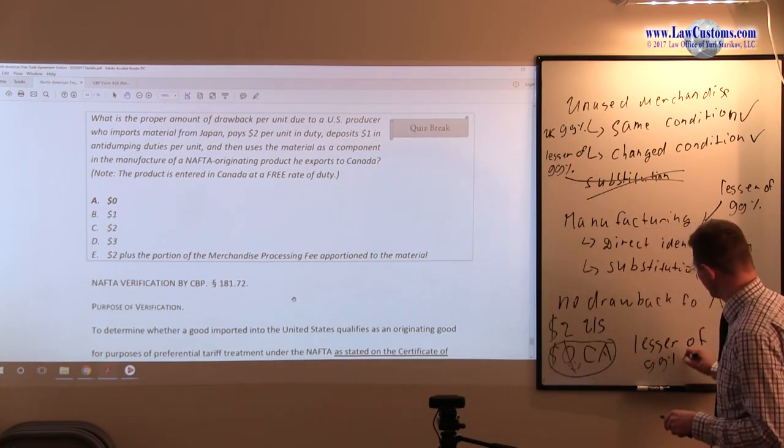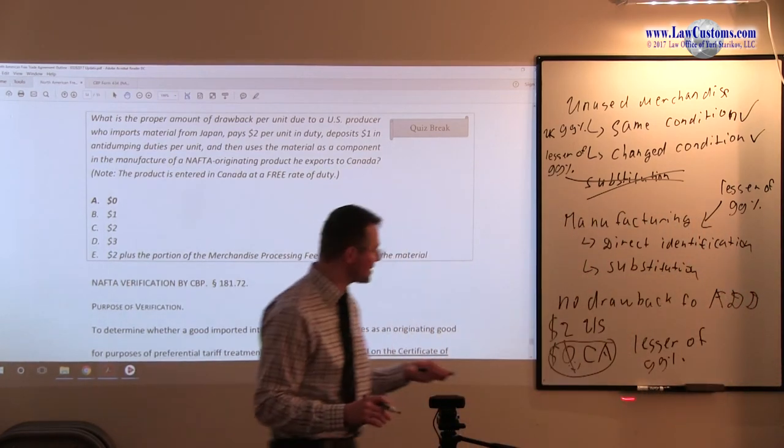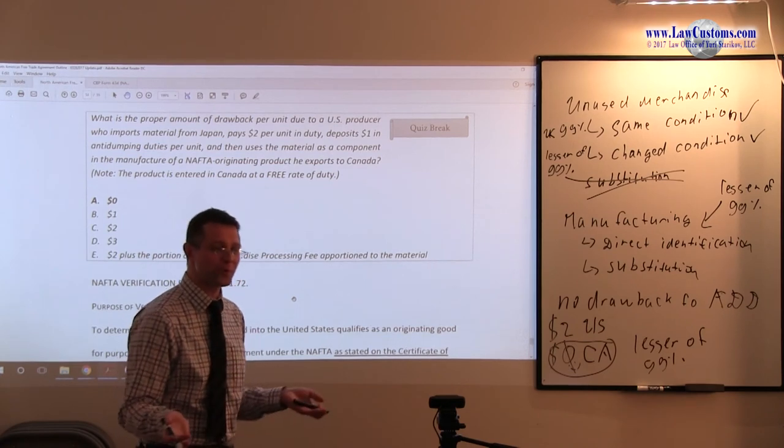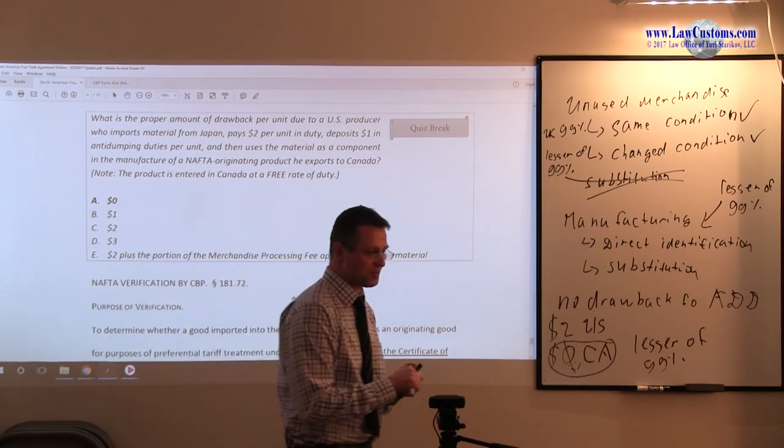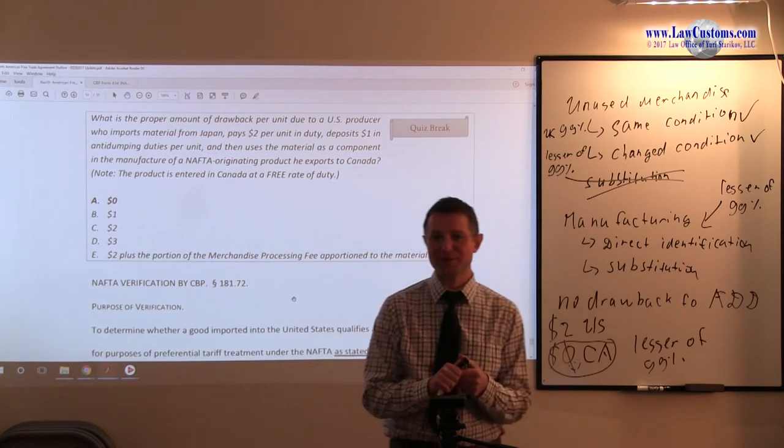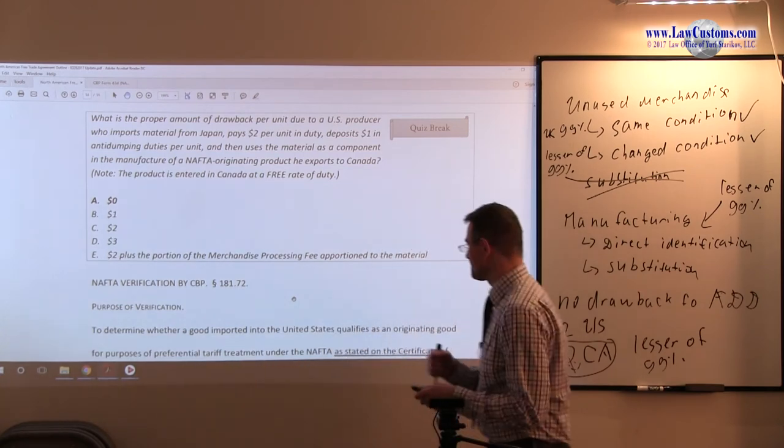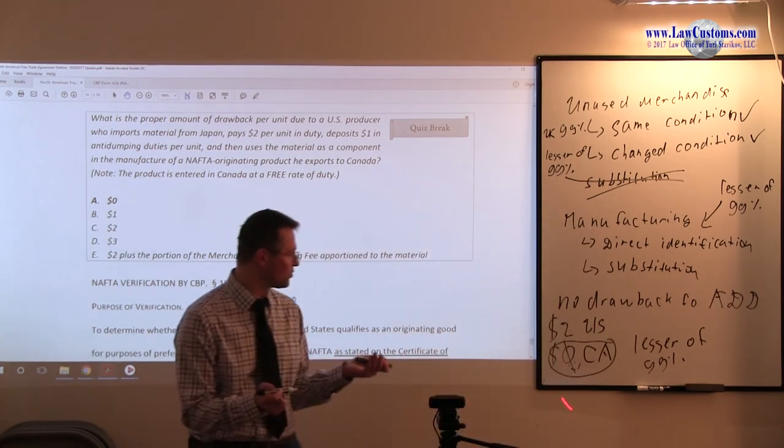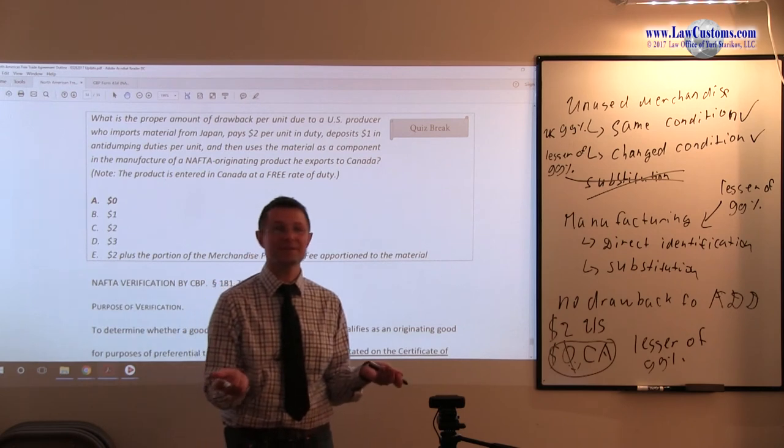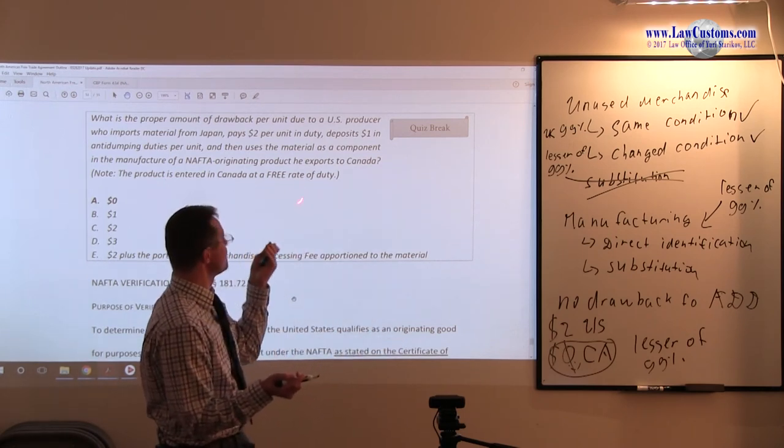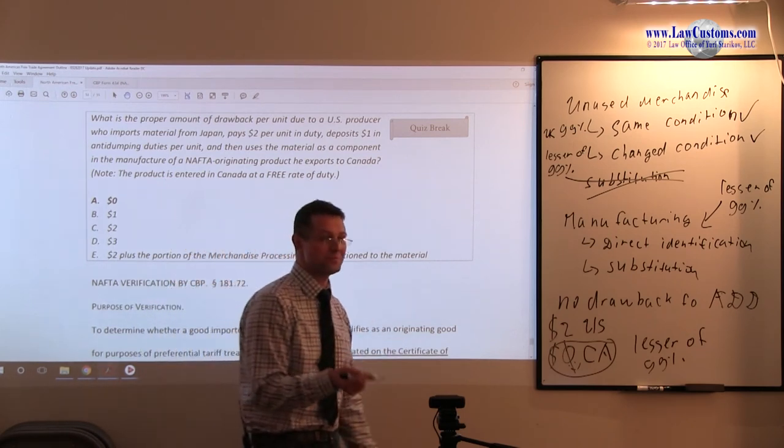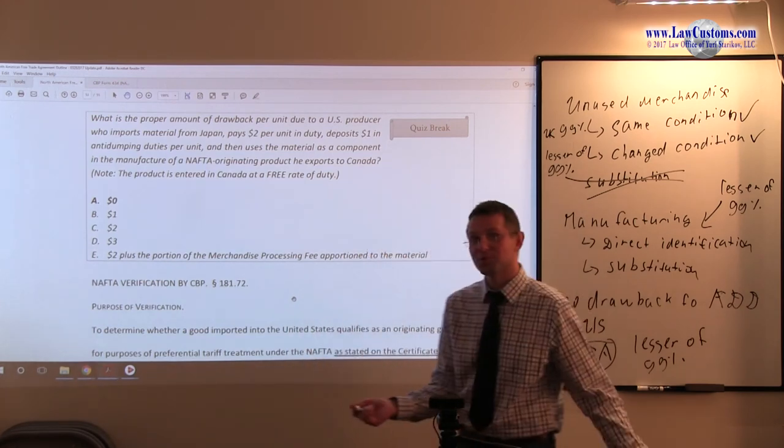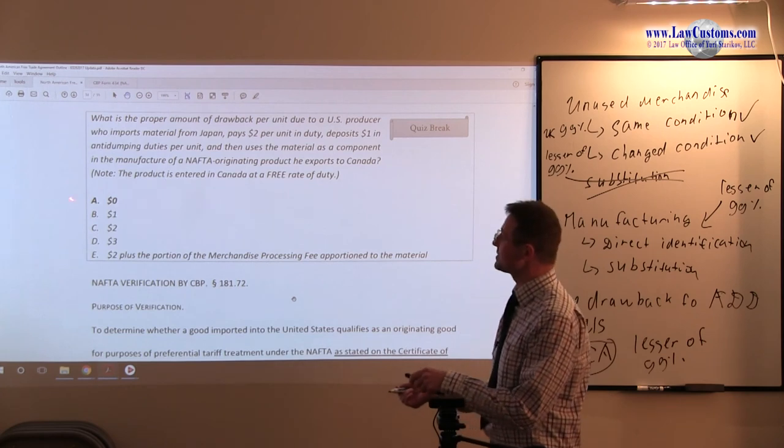So 99% of $0 is $0. So obviously, the poor guy who is engaged in the manufacturing doesn't get any break. So he doesn't get any duty refund. No duty refund for anti-dumping and no duty refund because of lesser-of rule because no duty paid to Canada. And that's obviously less - zero duties is less than two dollars in duties per unit. So here, A is the correct answer choice.